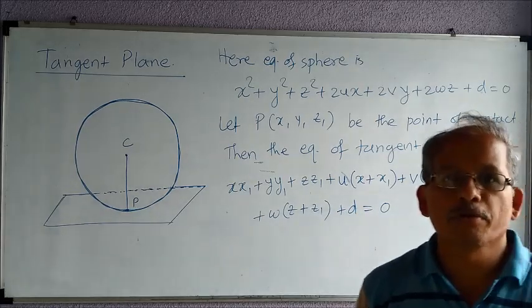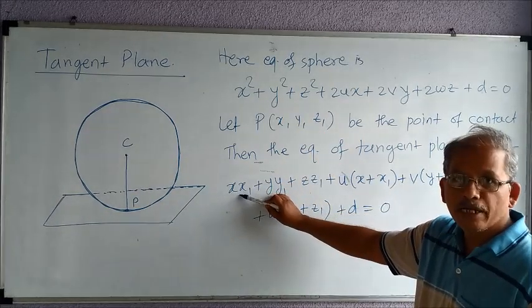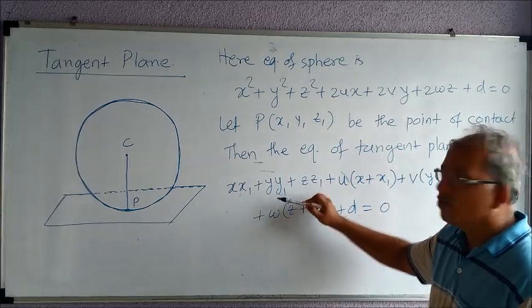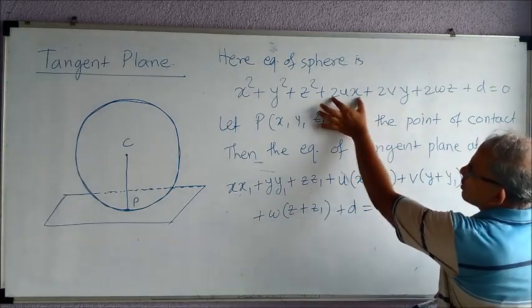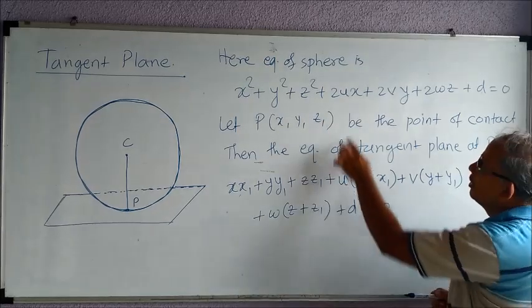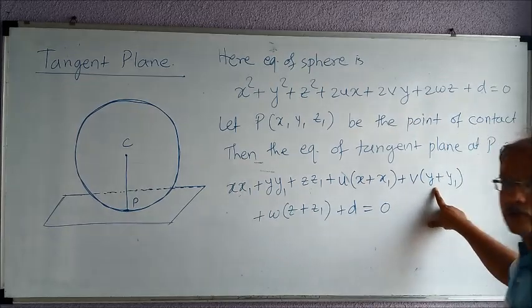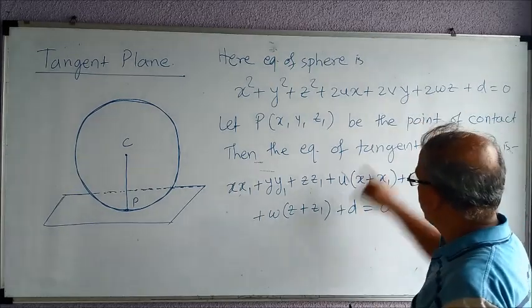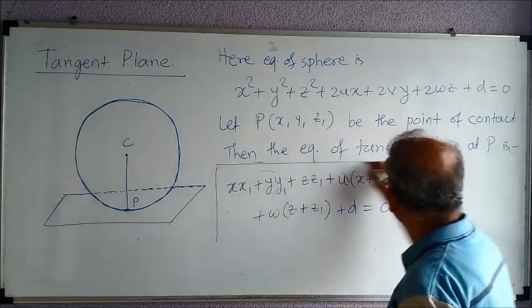See, it is very easy to remember. x square is replaced by x into x₁. Y square, y into y₁. Z square, z into z₁. Then 2x, so u remains as it is, 2x becomes x plus x₁. 2y becomes y plus y₁. And 2z becomes z plus z₁. And d remains as it is.